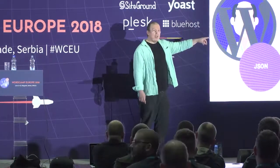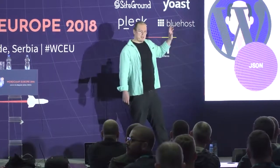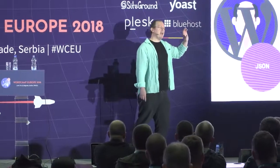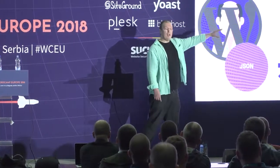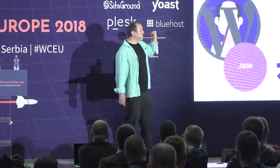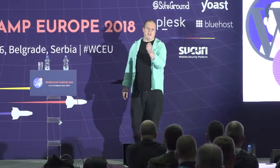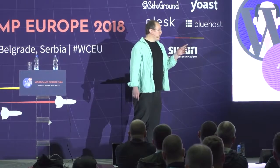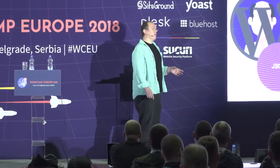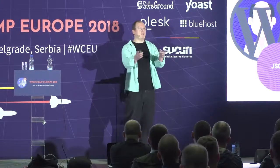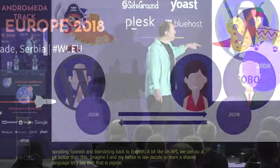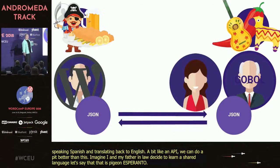My poor wife, who's in the middle, has to bounce between my father-in-law and me, trying to translate as I'm speaking English or terrible Spanish, and my father-in-law is speaking Spanish. So this is a bit like an API, but we can do better. Imagine that my father-in-law and I decide to learn a shared language — let's say Pidgin Esperanto. Now my wife can put her feet up; she doesn't need to translate anymore because we can communicate via this shared language.